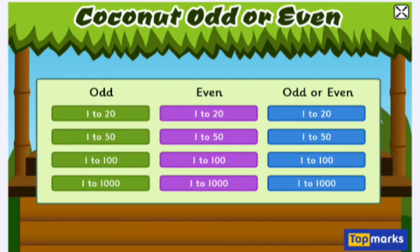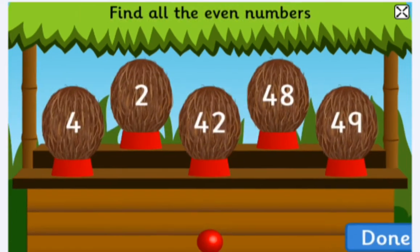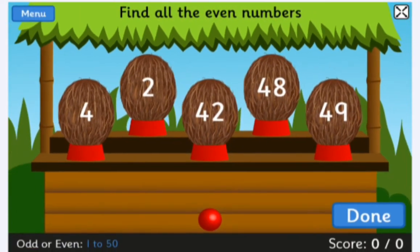Let's see how the odd or even number options look. I'll pick between 1 to 15. What you do basically is just tap on the coconut on the right-hand side, but always encourage children to read the instruction before they begin. For example, the instruction says find all the even numbers, so we get down to it very quickly.